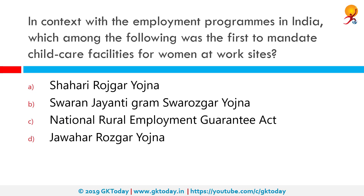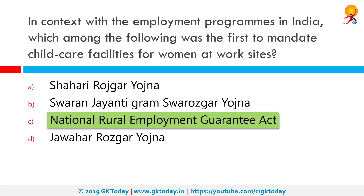In the context of employment programs in India, which among the following was the first to mandate childcare facilities for women at work sites? The correct answer is the National Rural Employment Guarantee Act. The NREGA of 2005 is an Indian labor law and social security measure that aims to guarantee the right to work.